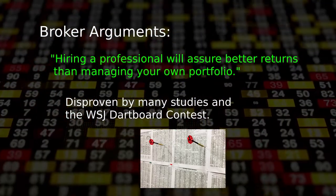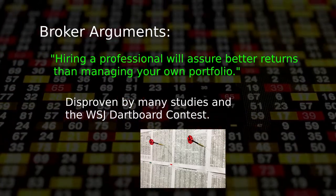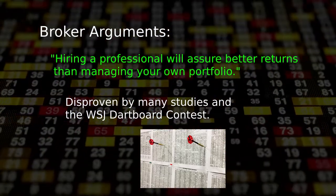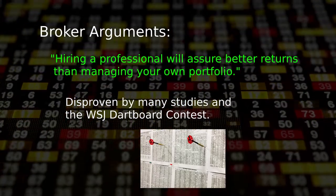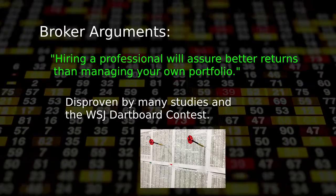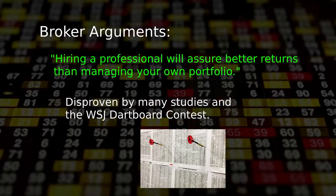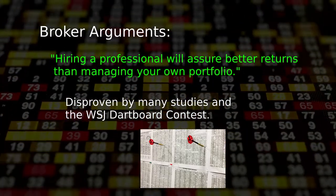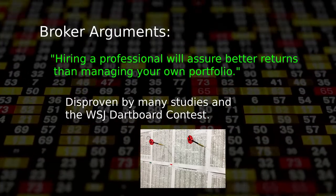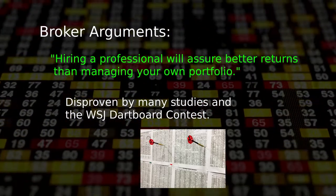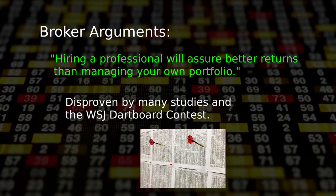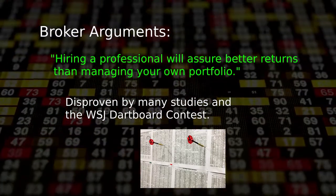It turns out the Wall Street Journal published the picks of the professionals and readers reacted by bidding up the price of those particular stocks, giving the pros an artificial advantage. But at the end of the 14-year contest overall, the professionals' performance was about the same as random picks. And if brokerage fees, sales commissions, and the tax implications of frequent trades are taken into account, the pros fell well behind market indices.